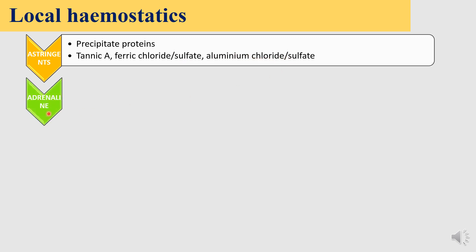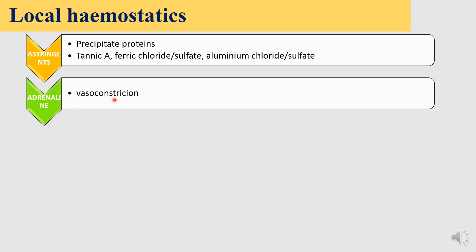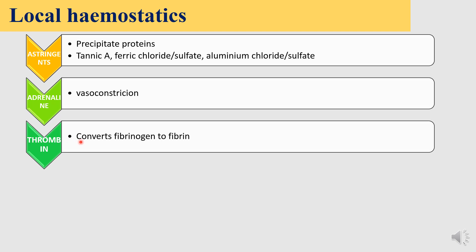Then we have adrenaline — it is a vasoconstrictor. If you have a cotton pad soaked in 0.1% adrenaline solution, you can apply that on the bleeding site to control local bleeding. Then we have thrombin — it converts fibrinogen to fibrin, facilitating the last step in the coagulation cascade and thereby promoting hemostasis.